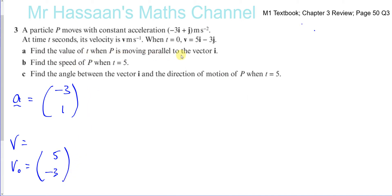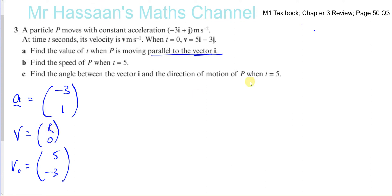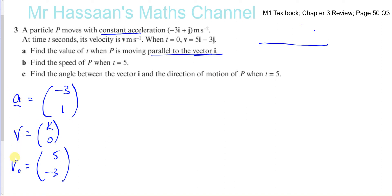Find the value of t when P is moving parallel to the vector i. When it's moving parallel to i, its velocity will have some value on the i component but 0 on the j component — because if it's moving parallel to i, it's going horizontally. We'll call the i component k; we don't actually need to know that. We know it's something on the i component but 0 on the j component. We have constant acceleration, so we use the SUVAT equations. The acceleration is like a, the initial velocity is like u, and we need to find t when v equals (k, 0).